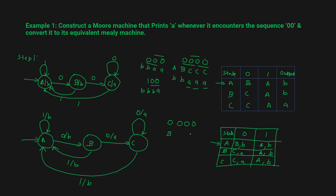In the Mealy machine, the output length equals the input length. Starting in state A, get input 0 → go to state B, output 'b'. In state B, get input 0 → go to state C, output 'a' — encountering '00'. In state C, get input 0 → stay in state C, output 'a'. Get another 0 → stay in state C, output 'a'. So the output is 'b a a a' — same length as the input.